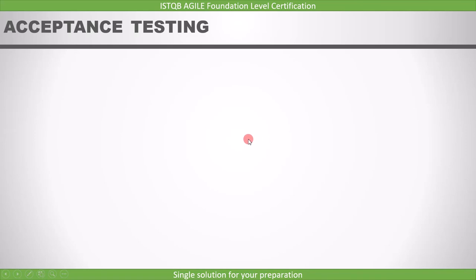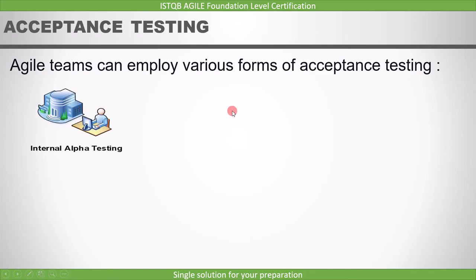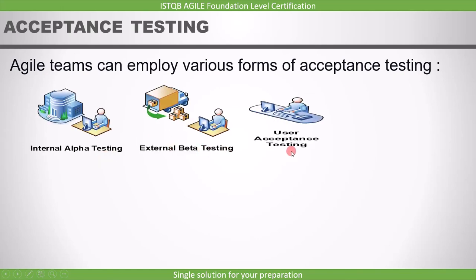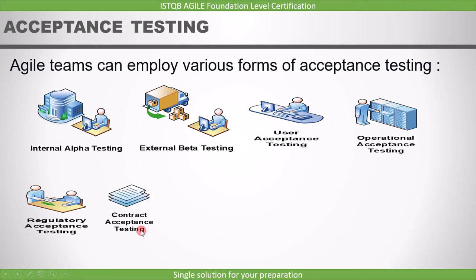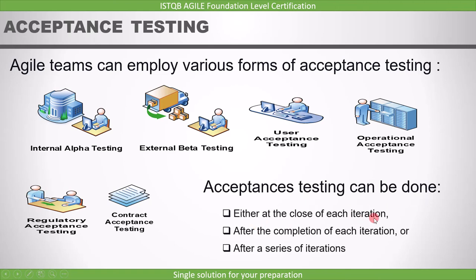The last type is acceptance testing. From an exam point of view, what you need to know is that agile teams can employ various forms of acceptance testing, for example: internal alpha tests and external beta tests, user acceptance tests, operational acceptance tests, regulatory acceptance tests, and contract acceptance tests. These can be done either at the close of each iteration, after the completion of each iteration, or after a series of iterations. This point is very important from an exam perspective.